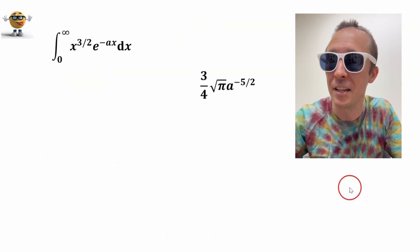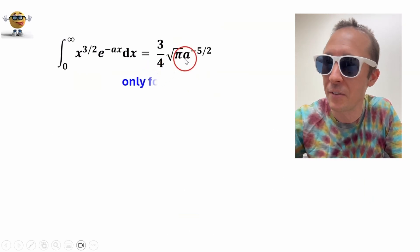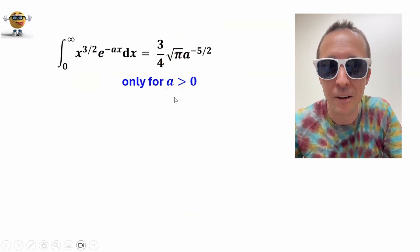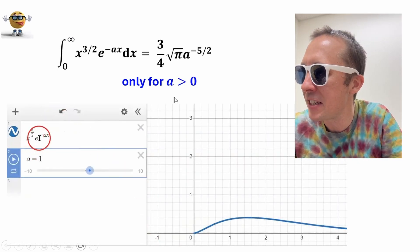now I should mention, this isn't always true, this is only true for certain values of a, a has to be greater than 0. If we look at the graph of this function, x to the 3 halves, e to the negative ax, where I just set a equal to 1,